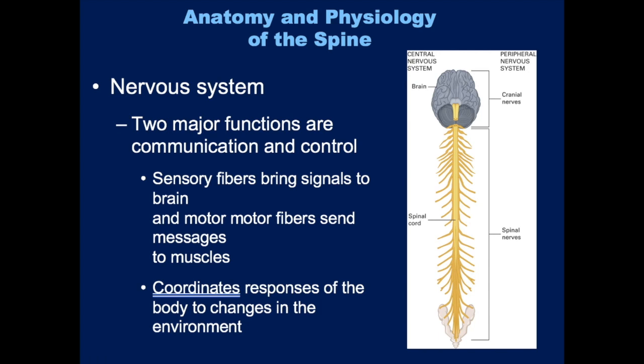The nervous system has two major functions: communication and control. It allows your brain to communicate with all the organs in your body. You have sensory fibers throughout your body that send messages back to your brain, and motor fibers that send messages to your muscles for movement. The spinal cord is responsible for receiving messages and perception from your body and then sending messages out for functions like muscular control.